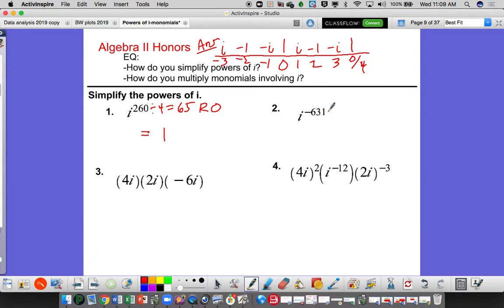If you divide this by 4, you would get 0.75, negative 157.75, which is remainder 3, and it's a negative. So I need to make sure I go over here to the negative 3, and this one would equal i.